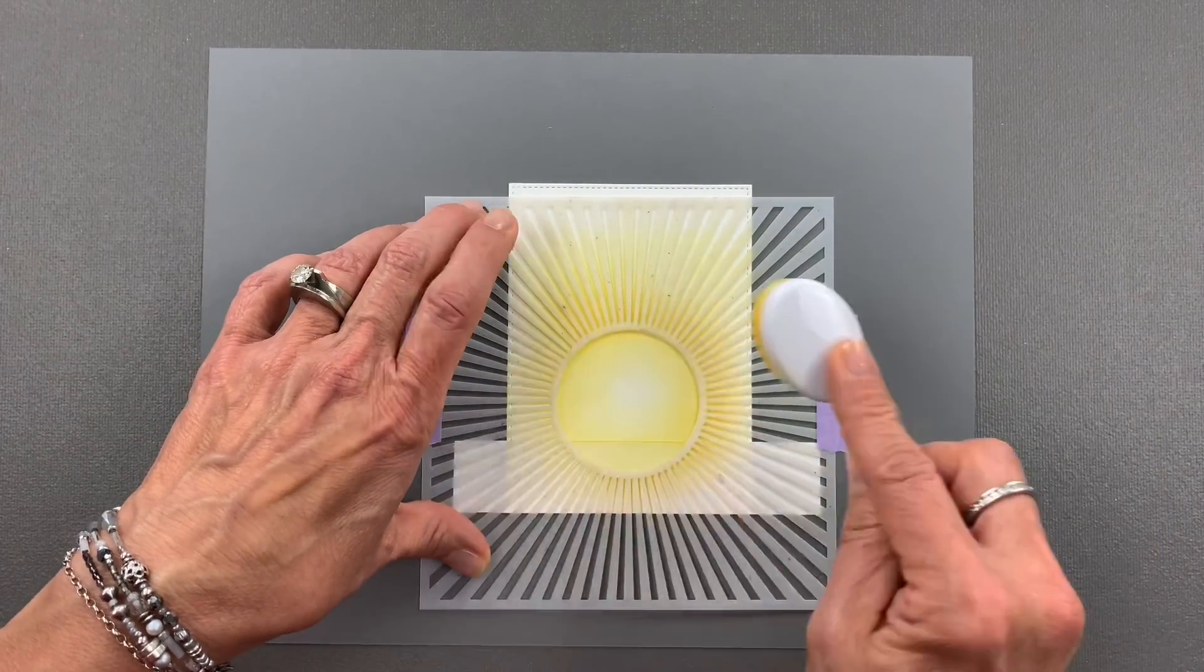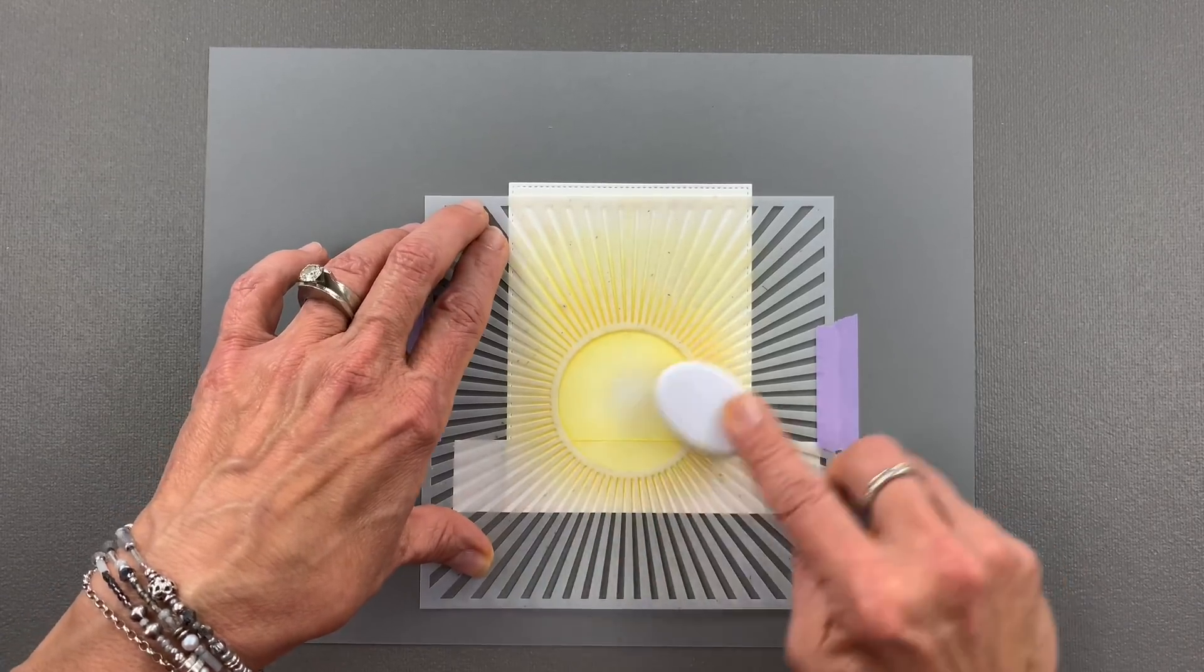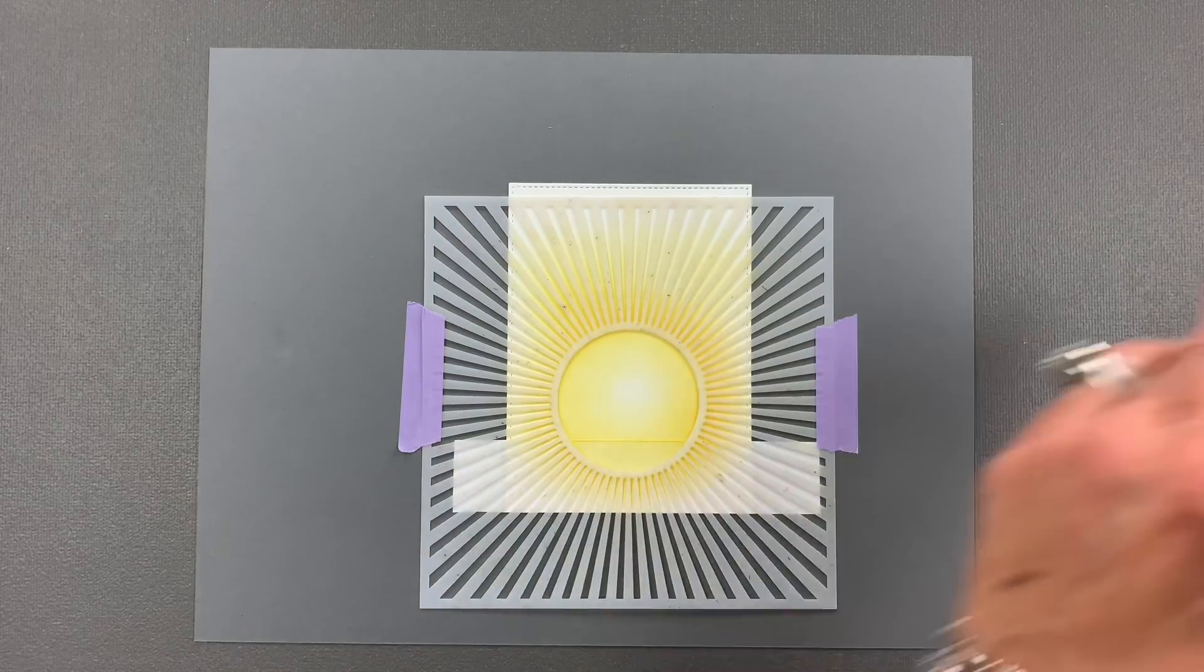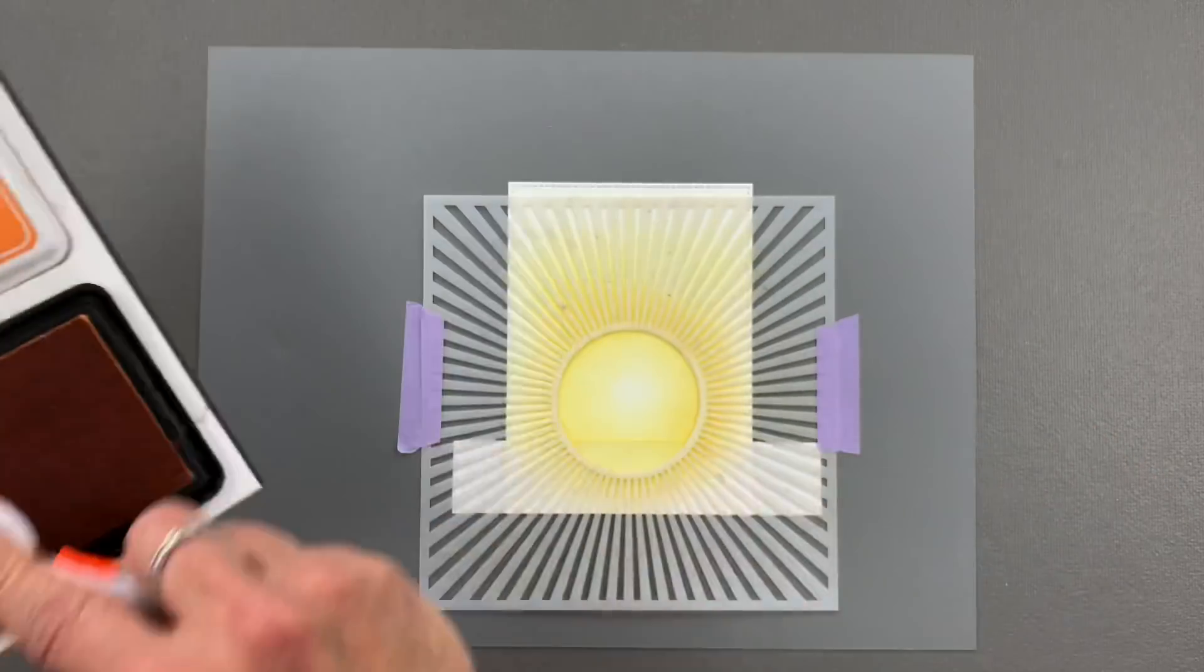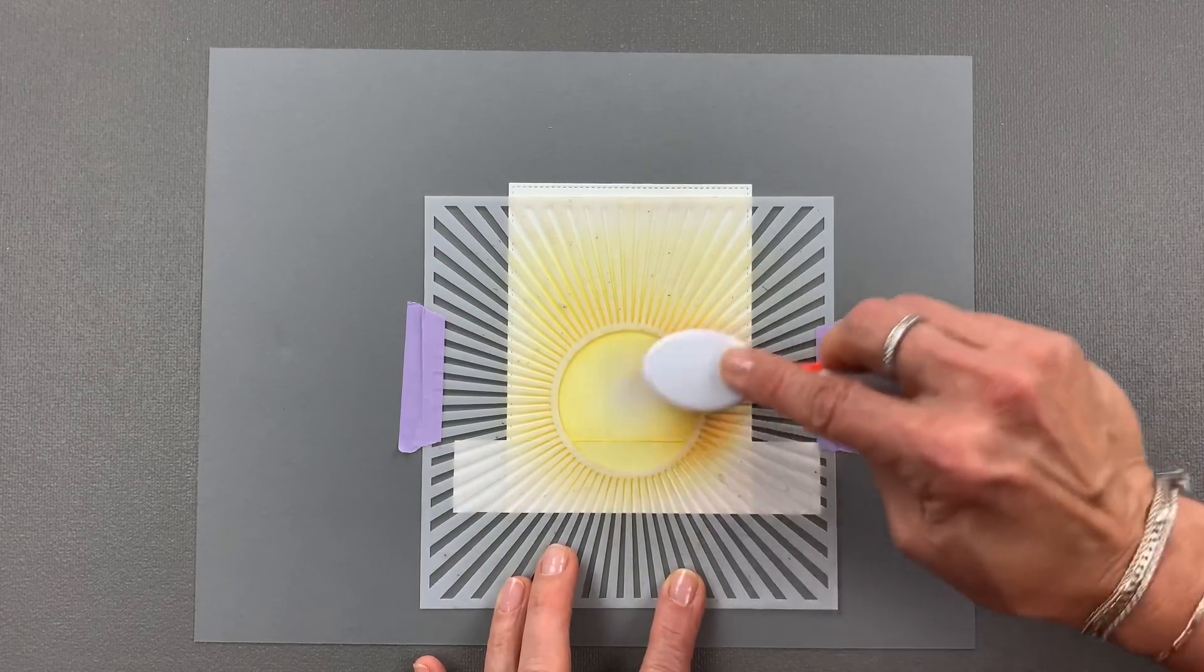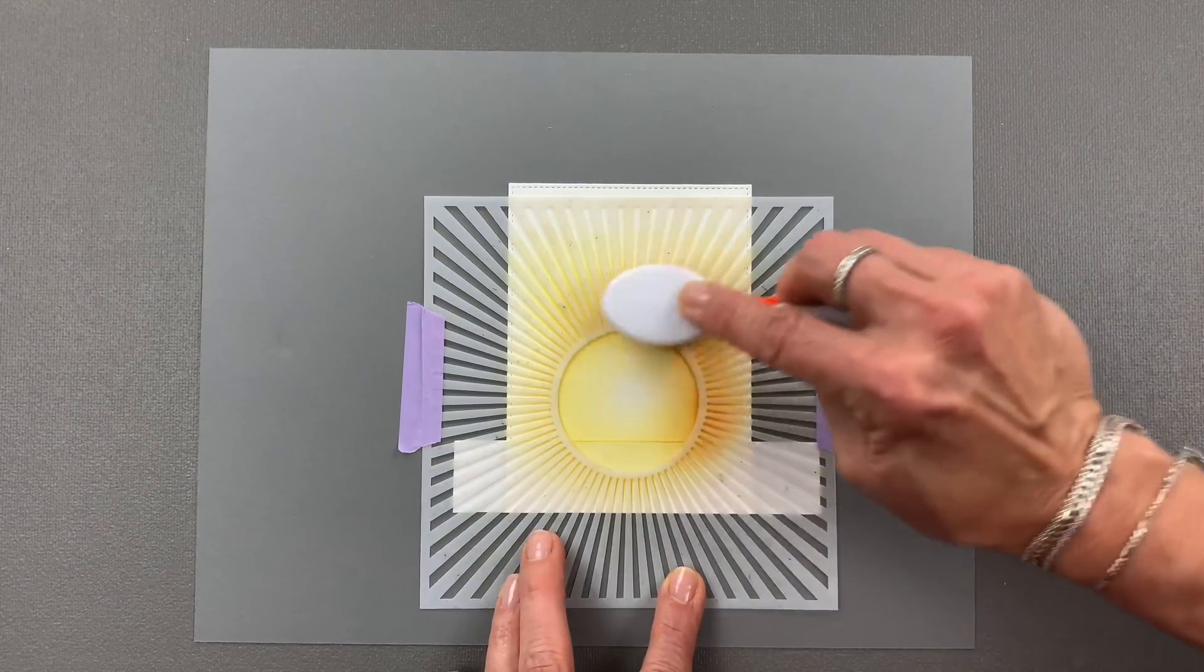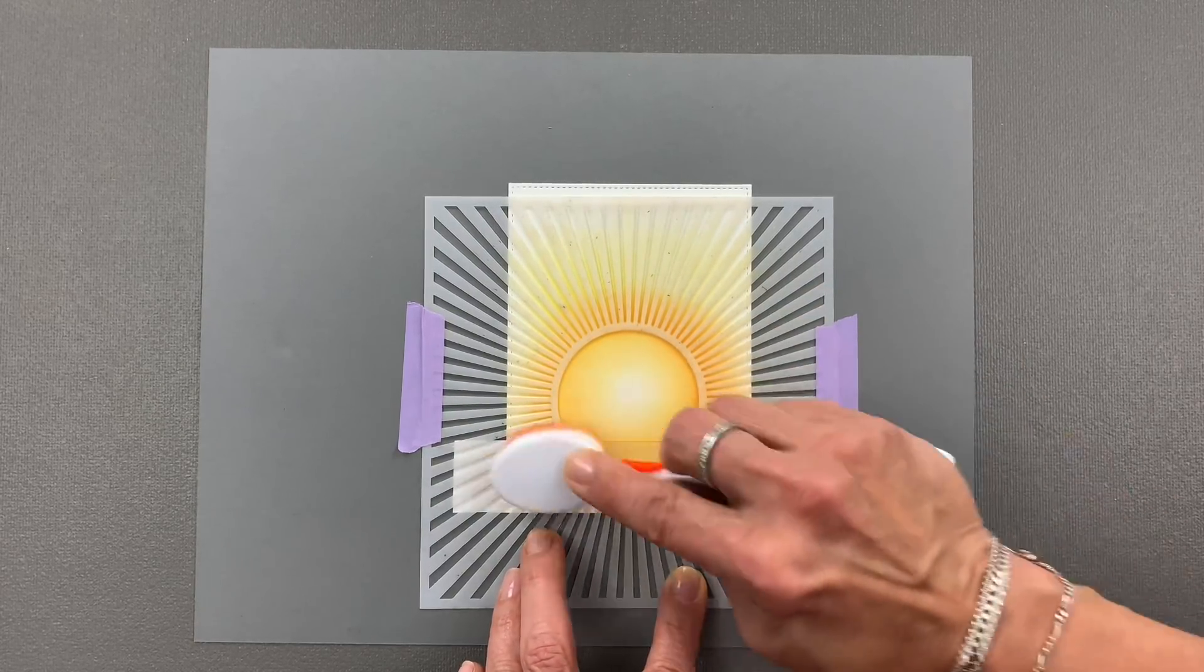For my next color, I'm going to use some Sweet Mango. So I have the Sweet Mango ink here and an orange blending brush and I just want to deepen that color around the sun, just the ball of the sun. That'll go up into the rays just a little bit and that's just fine.